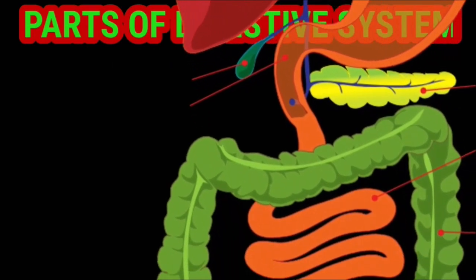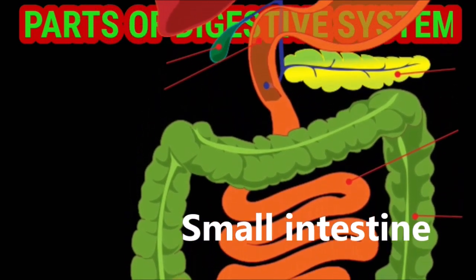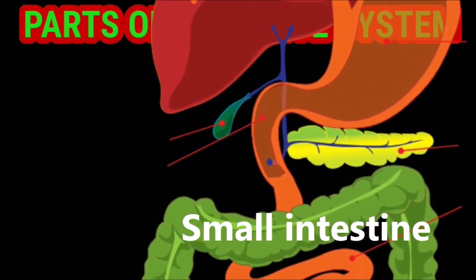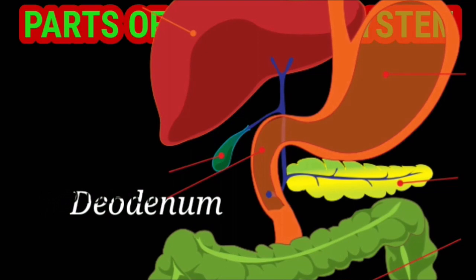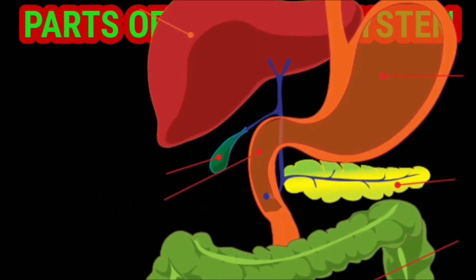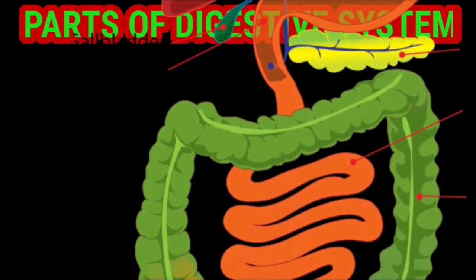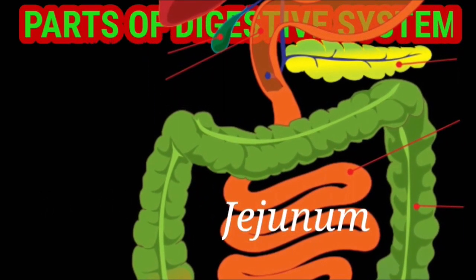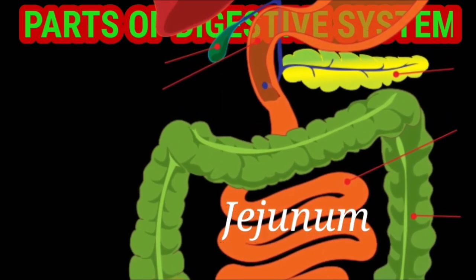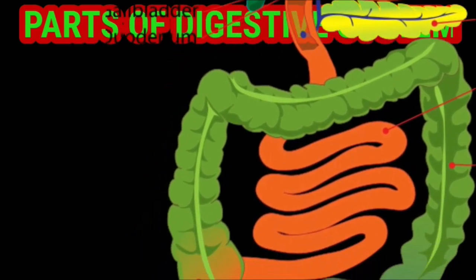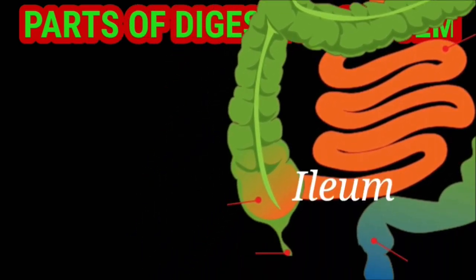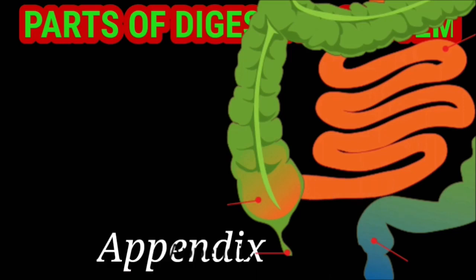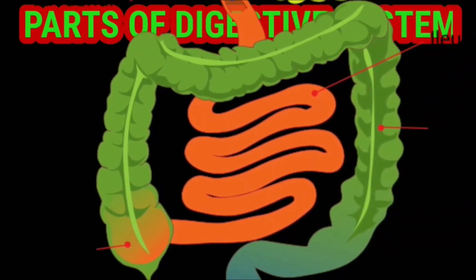The stomach further leads into the small intestine, which comprises three parts: the U-shaped duodenum, the highly coiled and long jejunum, and the final terminal part known as the ileum. At the place where the ileum opens into the colon, there is a small structure known as the appendix.